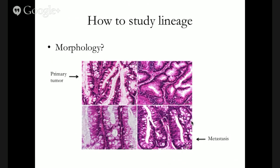How would we ideally go about determining lineage? It may come as a surprise that lineage is really determined based on morphology in pathology departments today. A patient presents with two tumors, both resected — the pathologist looks at them under the microscope, examines cell morphology, and makes a diagnosis: is this a primary tumor and its metastasis, or two independent primary tumors? But depending on where cancers grow and how they were treated, they can change morphologies pretty flexibly, so this is not a particularly safe way of determining lineage.